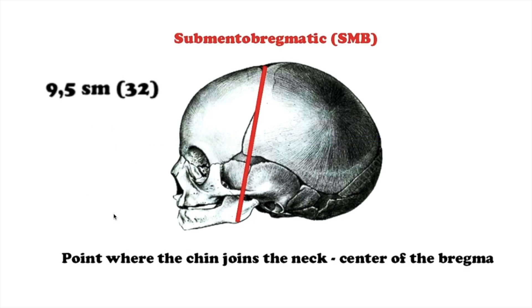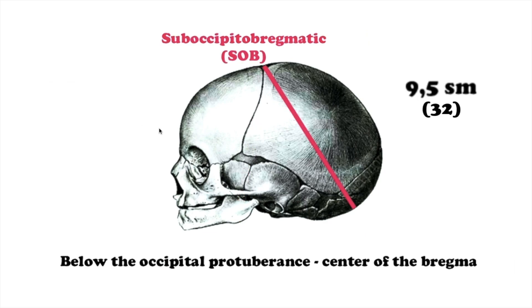The vertical dimension, diameter sub-mentopregmatic, is measured from the middle of the large fontanel to the hyoid bone, equals 9.5 cm. The corresponding circumference makes 32 cm.